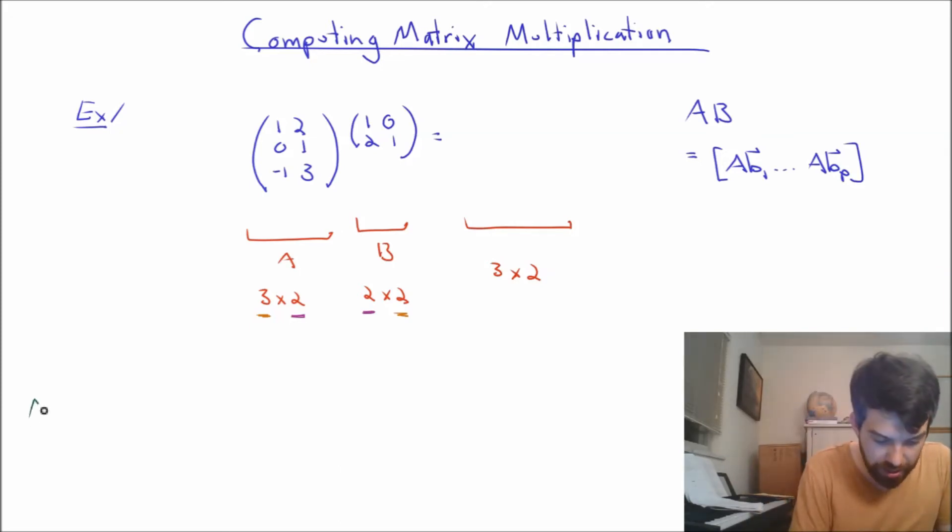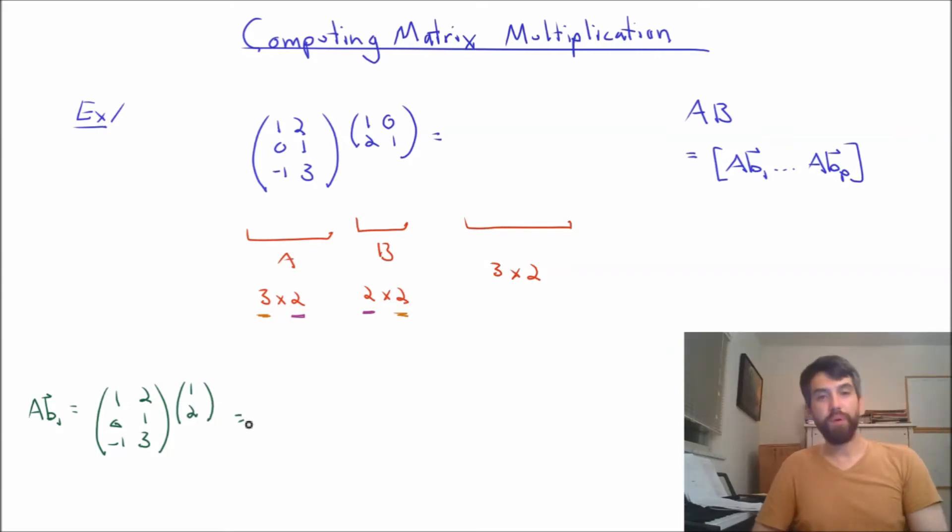The first one is going to be AB1, and this is the matrix A is 1, 0, minus 1, 2, 1, 3. And the first column of B1, there it is right there, the first column of B1 is going to be 1, 2. And then when I compute this out, we've done matrix vector multiplication before, but if I'm going to think of this as being some 3 by 1 vector, if I want to go and look at the first component here, I know that the way I do that is I take the first row over here, and then I multiply by the column.